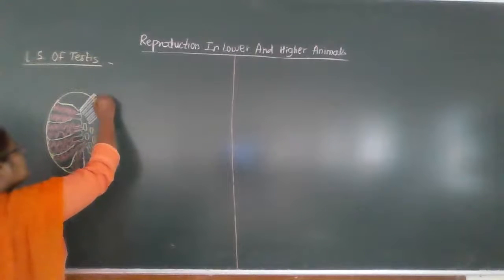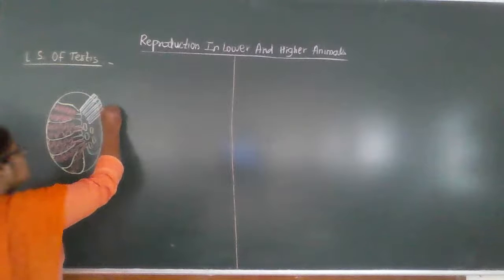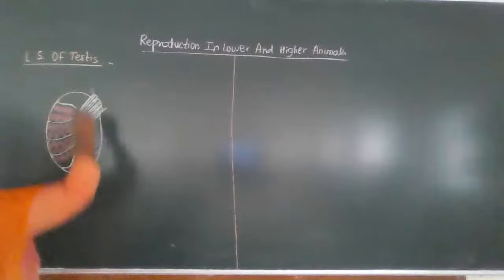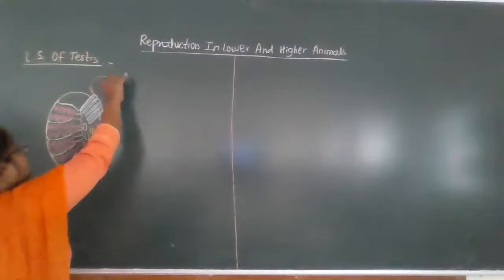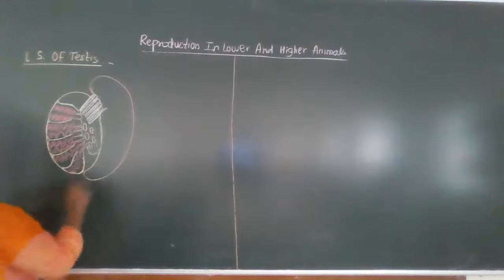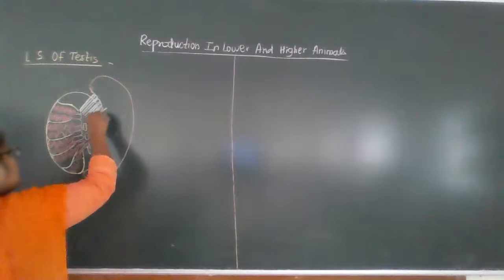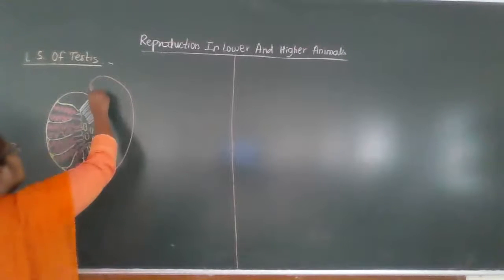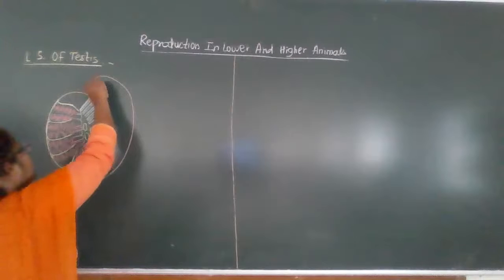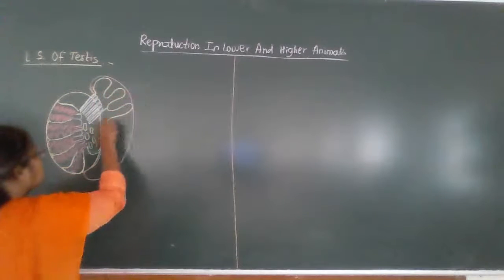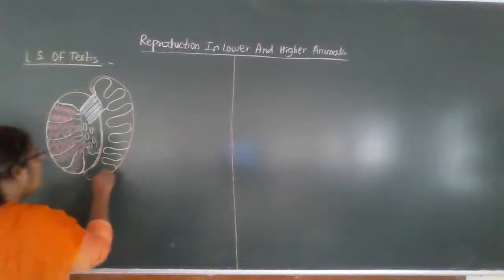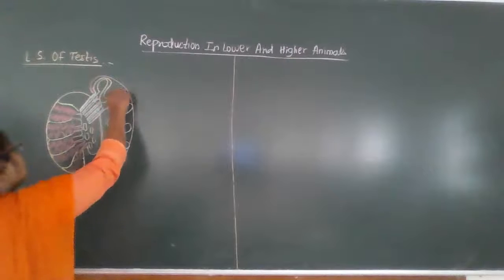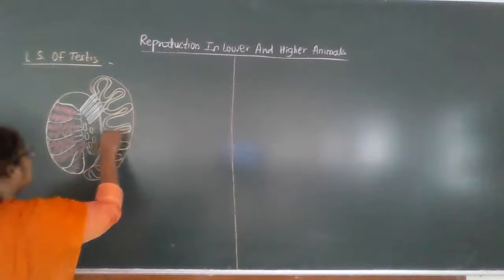These vasa efferentia then unite and commonly open into a common tube, which is highly coiled. This is a highly coiled structure, near about 6 meters in length.